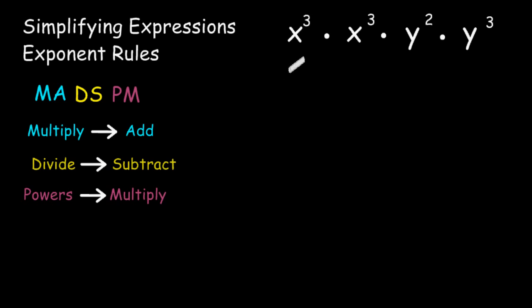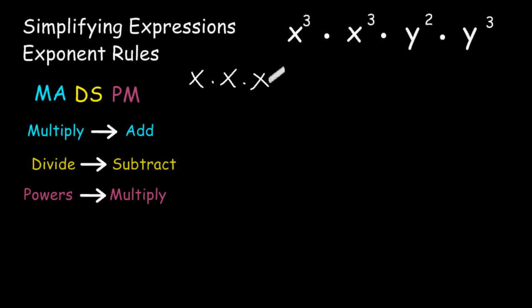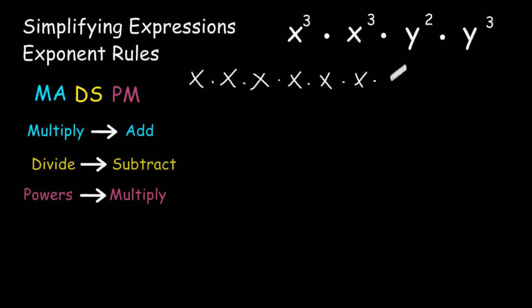One way we can understand how to simplify this expression is by writing each one of these terms in expanded form. So if we took x to the third power, which is really just x multiplied by itself three times, that would be x times x times x, followed by x to the third power, which in expanded form is x times x times x, times y to the second power, which is y times y in expanded form.